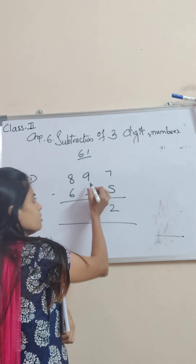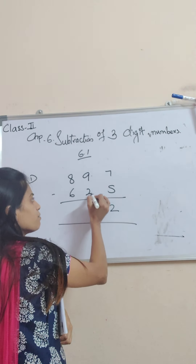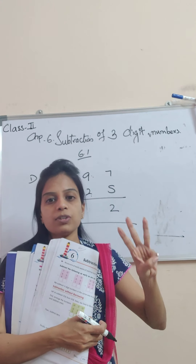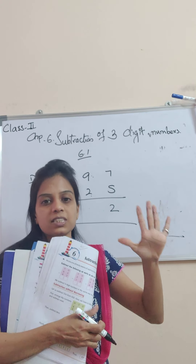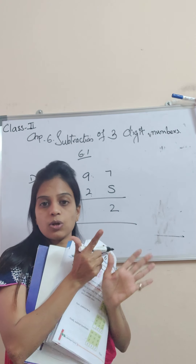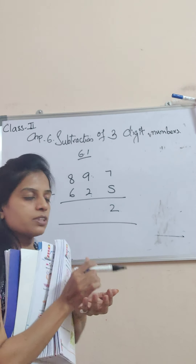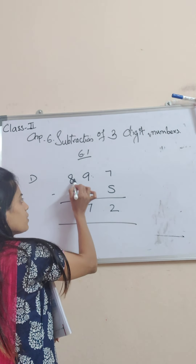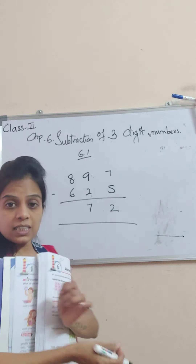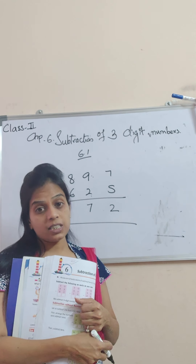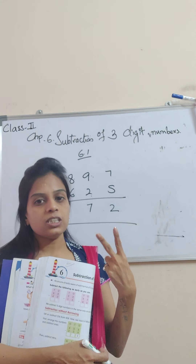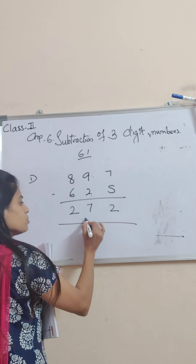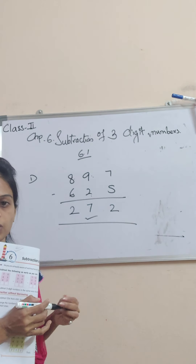I'll write here 2. Now, 9 minus 2. After 2, count till 9: 3, 4, 5, 6, 7, 8, 9. So how many fingers? 7. So I'm going to write here 7. Now, 8 minus 6. After 6, count till 8: 7, 8. Again, 2 fingers. So I'm going to write here 2. So this is your answer.